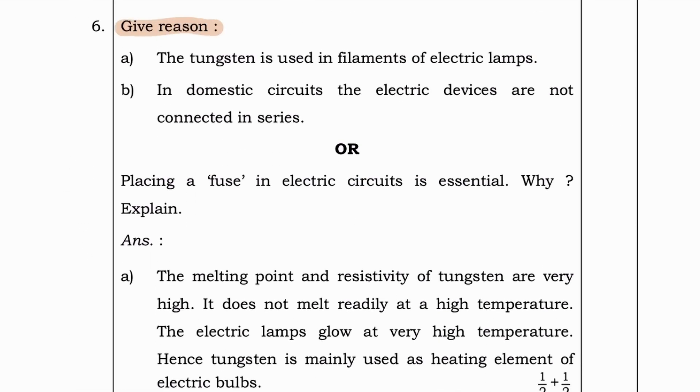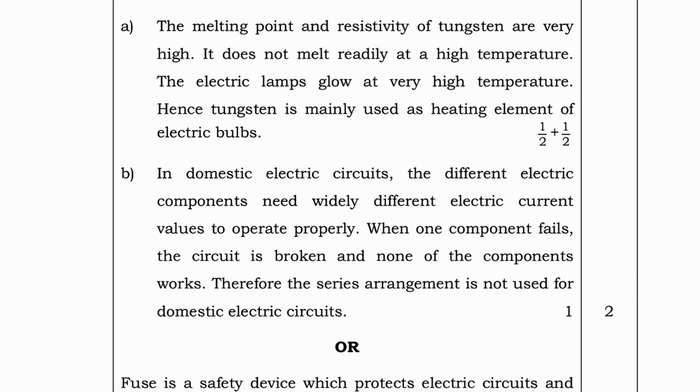Next, give reason. A. The tungsten is used in filaments of electric lamp. B. In domestic circuits, the electric devices are not connected in series. For A. The melting point and resistivity of tungsten are very high. B. It does not melt readily at a high temperature. The electric lamps glow at very high temperature. And hence, tungsten is mainly used as heating element of electric bulbs.